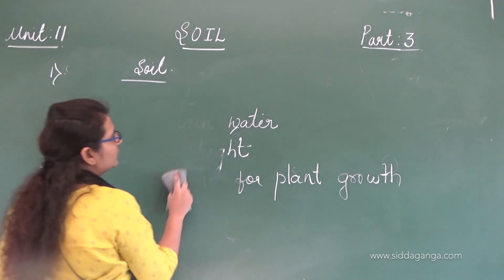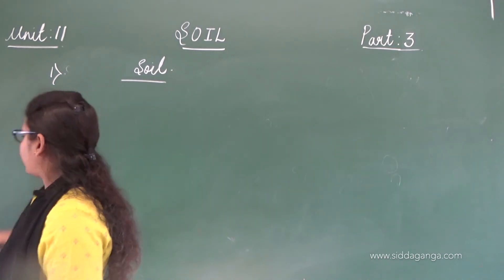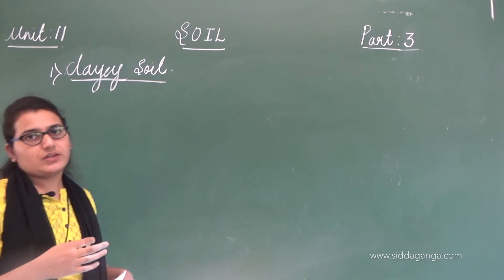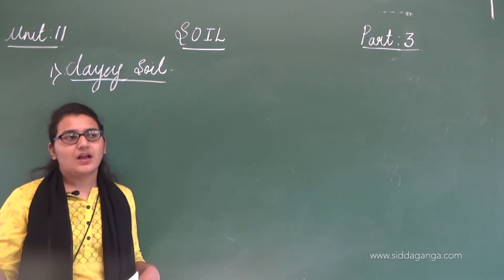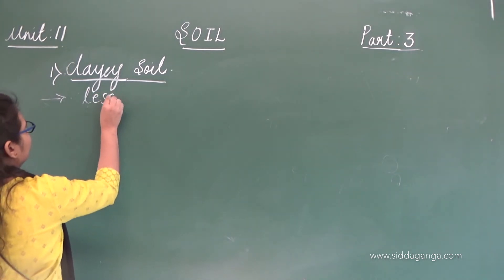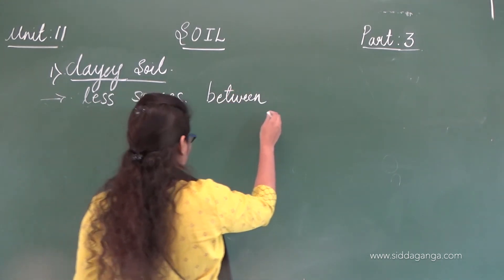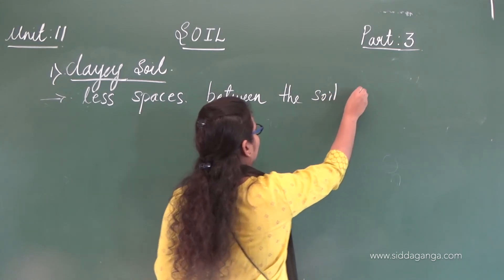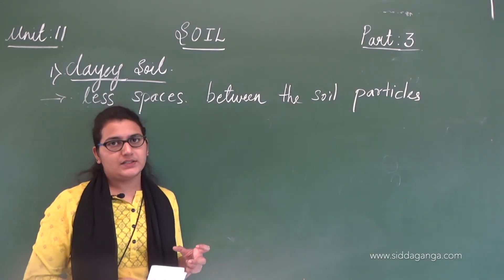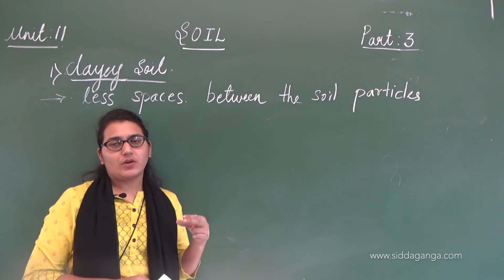Now let us see about the next type of soil — that is clayey soil. As mentioned, this is opposite to sandy soil. This soil has more number of small particles than big particles. Since we have more small particles than bigger ones, the spaces are very less compared to sandy soil.